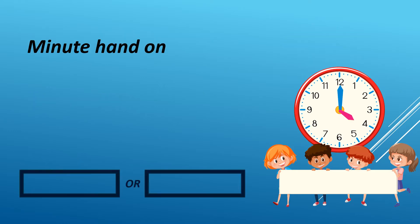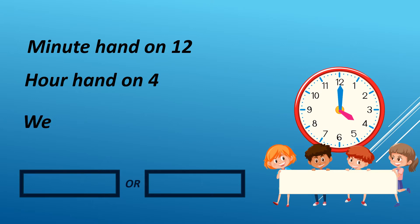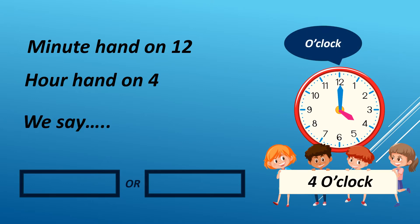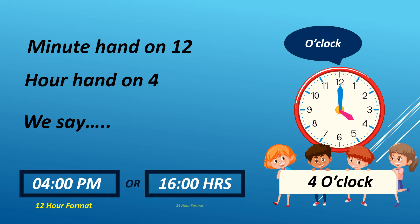Minute hand is on 12, hour hand is on 4 — we say 4 O'clock. It can either be AM or PM. For example, it is 4 PM in 12-hour format. We read it as 1600 hours in 24-hour format.